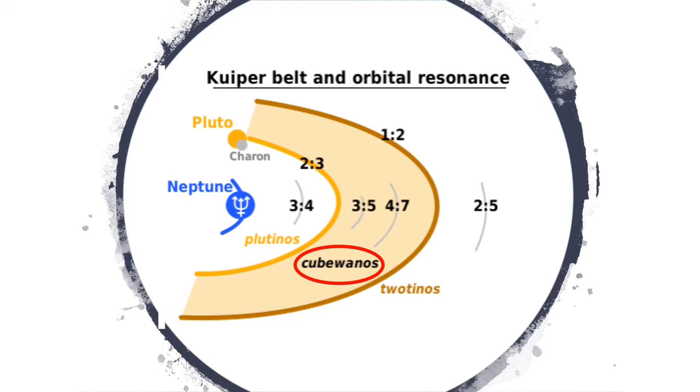Next, we have Plutinos. These objects include Pluto, and are in a 2-3 orbital resonance, meaning that Neptune orbits three times for every two orbits of the Plutinos. Lastly, there are 2Tinos, and as the name implies, they orbit once for every two of Neptune's.